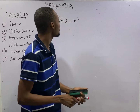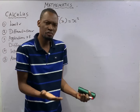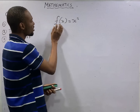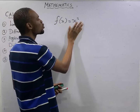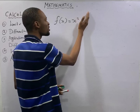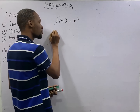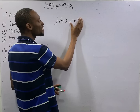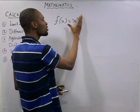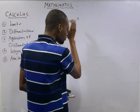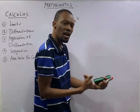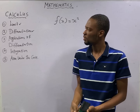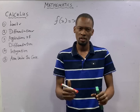A function actually relates input to output. For example, if the function of s equals s squared, then s is the input and s squared is the output. To find the slope or rate of change of a function, we differentiate.